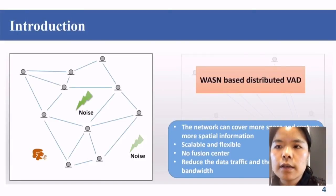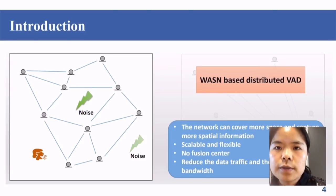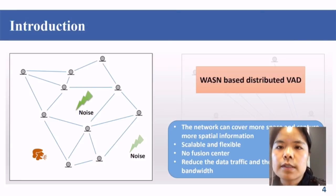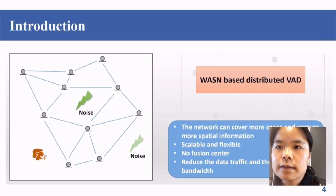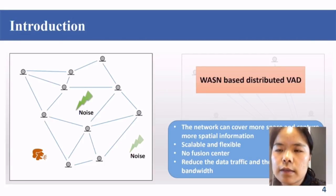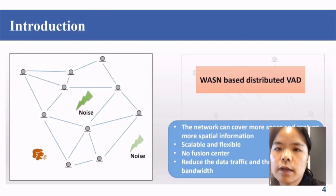What we prefer is to develop a system which uses the Wireless Acoustic Sensor Network to do distributed voice activity detection. Because of the system itself, the network can cover more space and capture more spatial information. The network and the distributed method are both scalable and more flexible. There is no need for a fusion center, so data traffic and communication bandwidth in the network are reduced.